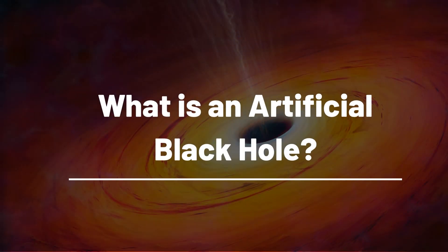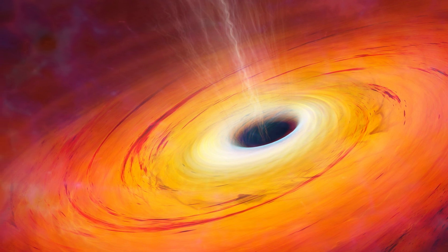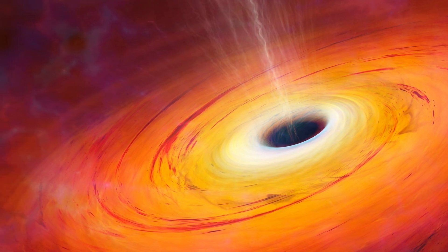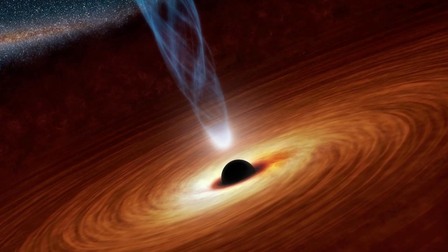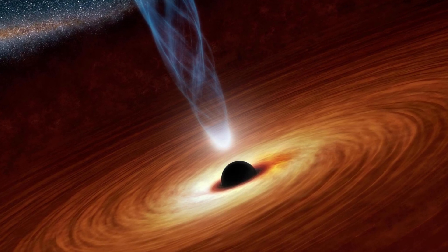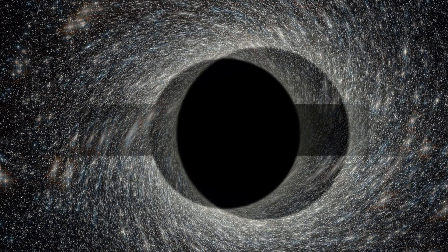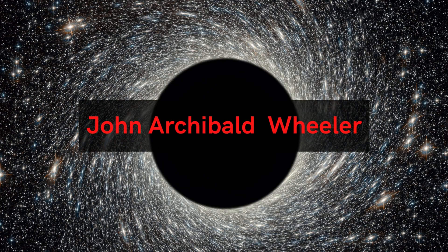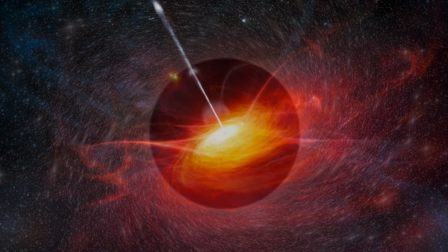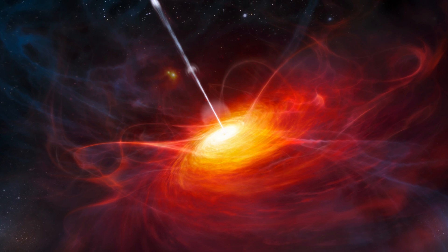What is an artificial black hole? An artificial black hole is a hypothetical compact region of space that has a gravitational field so strong that nothing, not even electromagnetic radiation, can escape from it. The idea was first proposed by John Archibald Wheeler in 1967 as a way to explain certain features of quasars, and later developed further by Stephen Hawking.